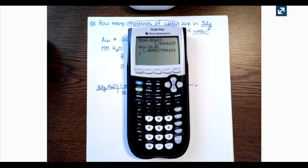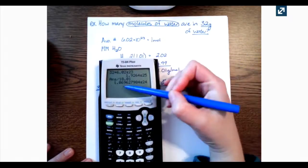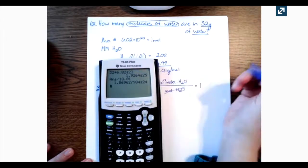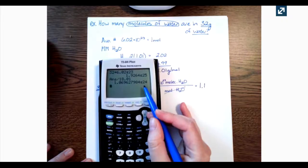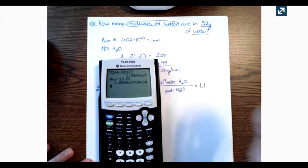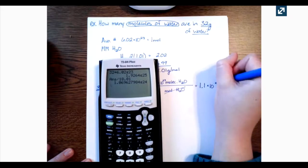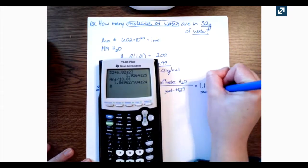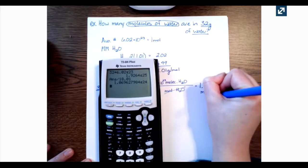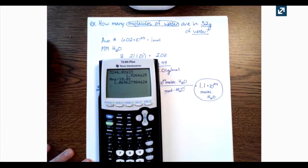I still need to think about sig figs. I'm going to round 1.069 — that gets rounded to 1.1. And remember, I don't write E because that's calculator speak; I need to put it in scientific notation. So my final answer is 1.1 times 10 to the 24th molecules of water. I hope that helps — please let me know if you have any questions!